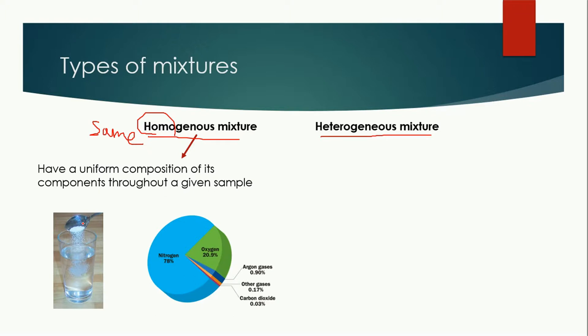For example, you have a glass of water and you add salt in it and mix it. All the drops or all parts of that solution will have the same composition, so it is a homogeneous mixture. Similarly, air is also a homogeneous mixture because it has a uniform composition like nitrogen 78%, oxygen 20.9% throughout the sample.